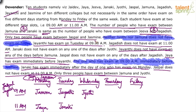Only two people have exam between Jaspal and Jasmine, and between Jeeva and Jagdish there also have to be two persons. Since Jagdish takes a 9am slot, if Jagdish comes on Thursday 9am, Jeeva comes two slots after — or if Jagdish takes Friday, Jeeva comes two slots before. There are two possibilities for Jagdish — either Thursday or Friday. Similarly, Jaspal and Jasmine have two possibilities.